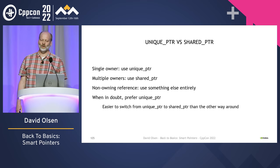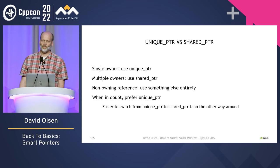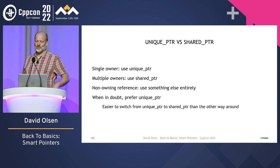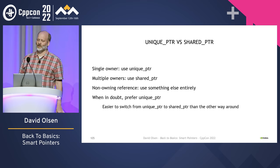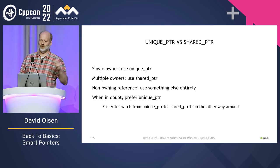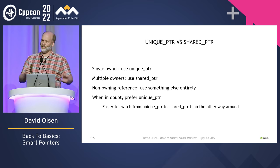Now that we have covered both unique_ptr and shared_ptr, when should you use one or the other? If an object and its memory have only one owner at a time, use unique_ptr. If an object and its memory can have multiple owners simultaneously, use shared_ptr. If you have a non-owning reference, don't use either. If you are unsure, go with unique_ptr — once you know more about how your object will be used and the right choice becomes obvious, it will be much easier to change your code from unique_ptr to shared_ptr than the other way around. It's also easier to change your source code from unique_ptr to shared_ptr than vice versa.